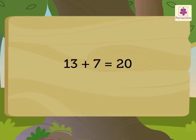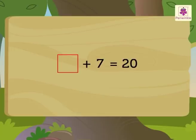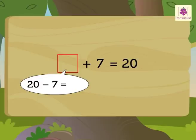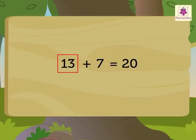To find any missing addend, we need to subtract the given addend from the sum. So, if only one addend, that is 7, and the sum, that is 20, is given, we subtract 7 from 20 to get 13 — the missing addend.